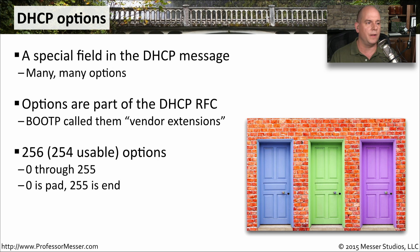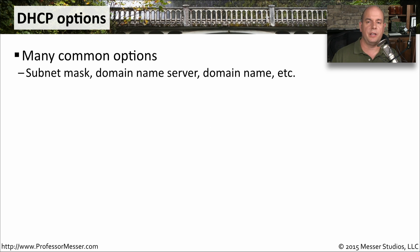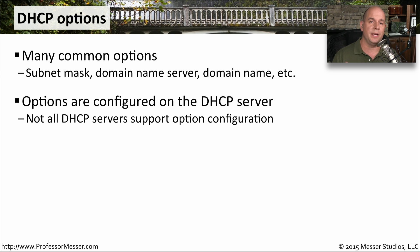There are so many options available — 254 usable options between 0 and 255. We don't use 0, and we don't use 255, giving us 254 options in the middle that we can configure. We'll configure the very common options on our DHCP server — IP address, subnet mask, and default gateway — but we'll also configure those additional options as well. You do have to check with your DHCP server, because not all DHCP servers support option configuration, so check the documentation to make sure you can configure those options.